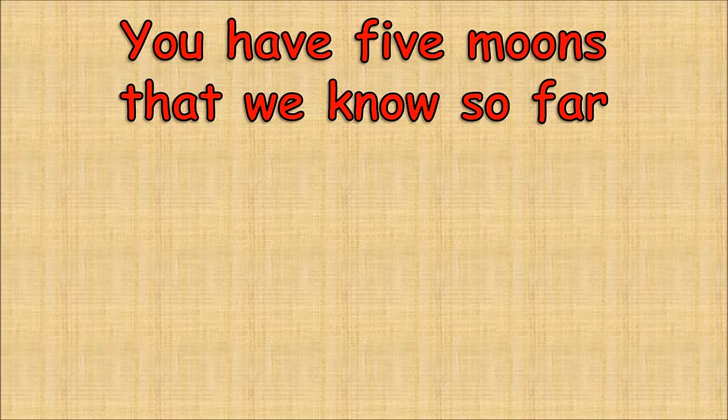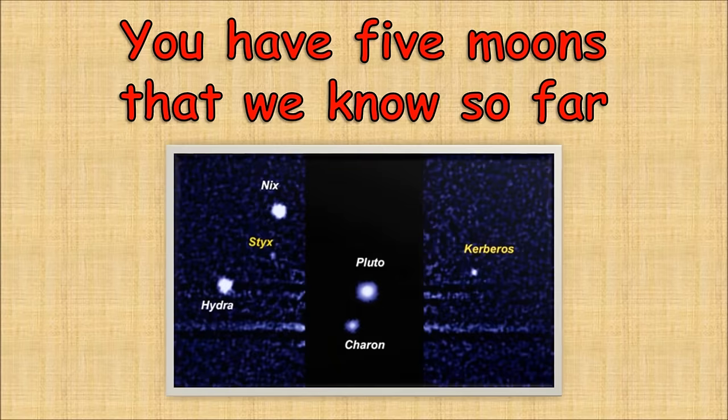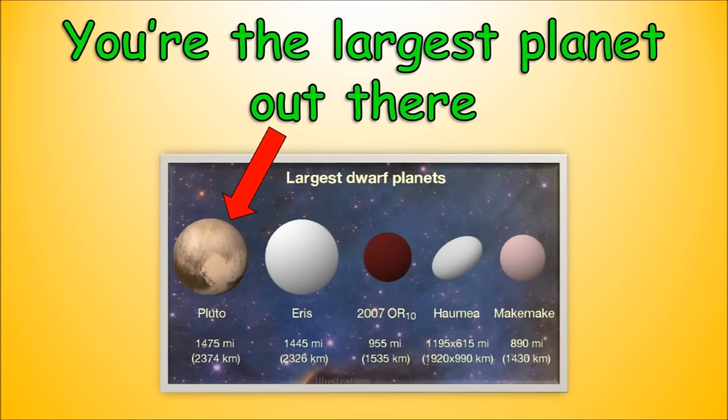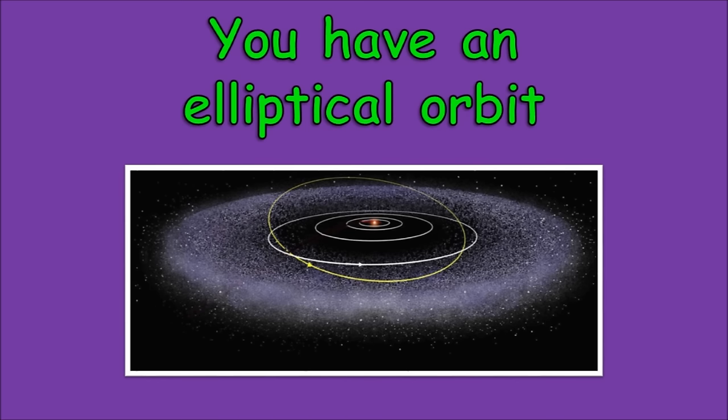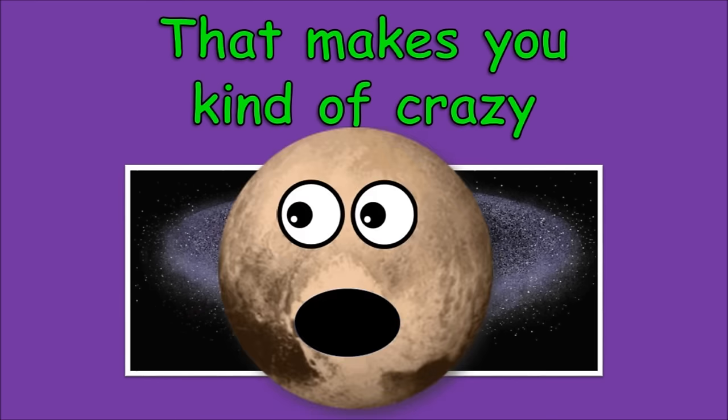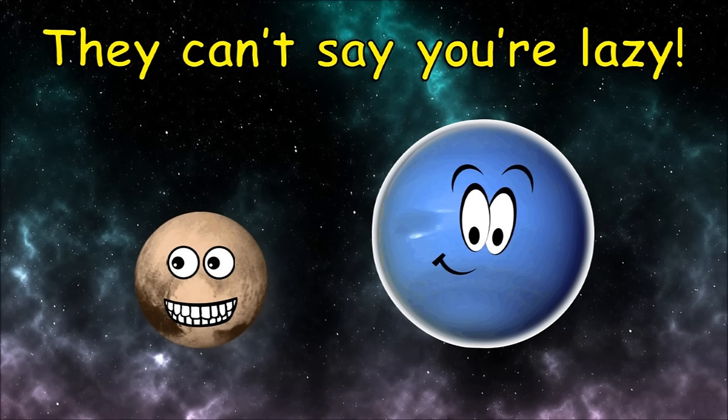Pluto, you have five moons that we know so far. You're the largest planet out there among the dwarfs. You have an elliptical orbit that makes you kind of crazy, trading places with Neptune that gets that you're lazy.